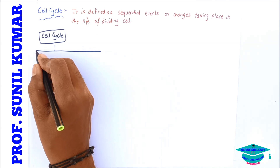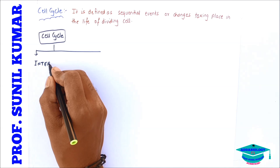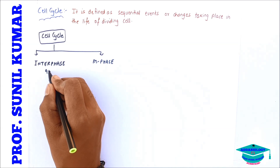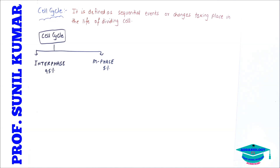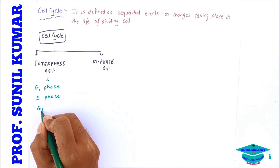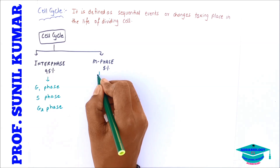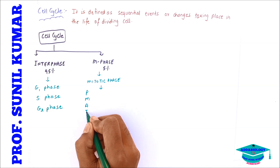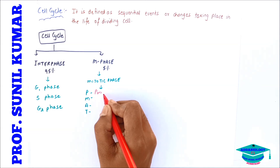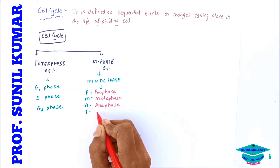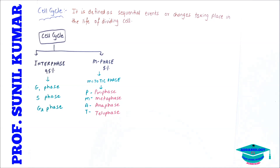The cell cycle is divided into two major parts: interphase and M phase. 95% of the cell cycle is interphase and 5% is M phase. Interphase is further divided into G1 phase, S phase, and G2 phase. M phase is called the mitotic phase and is divided into PMAT — prophase, metaphase, anaphase, and telophase — which are the four major stages of M phase.